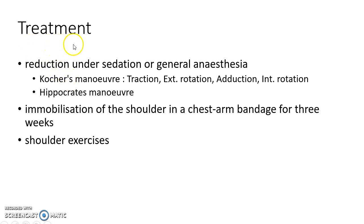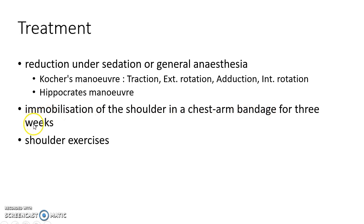Treatment of shoulder dislocation involves reduction under sedation or general anesthesia. The Kocher's maneuver involves traction, external rotation, adduction, and internal rotation. The Hippocrates maneuver can also be used. Following reduction, the shoulder should be immobilized in a chest-arm bandage for 3 weeks, followed by shoulder exercises.